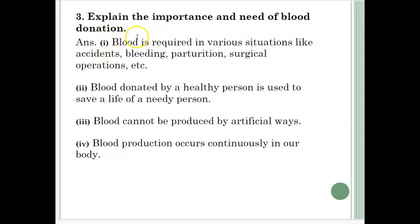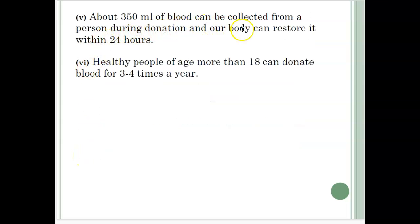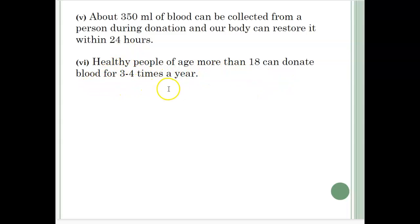Explain the importance and need of blood donation. Blood is required in various situations like accidents, bleeding, parturition, surgical operations, etc. Blood donated by a healthy person is used to save the life of a needy person. Blood cannot be produced by artificial ways; blood production occurs continuously in our body. About 350 ml of blood can be collected from a person during donation and our body can restore it within 24 hours. Healthy people of age more than 18 can donate blood 3-4 times a year.